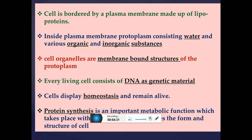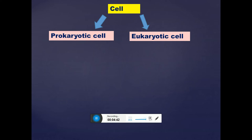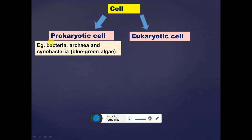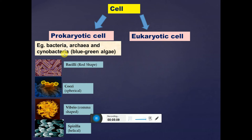Cells are categorized into two large categories: prokaryotic cells and eukaryotic cells. In today's lecture we are concentrating on the prokaryotic cell. Examples of prokaryotic cells include bacteria, archaea, and cyanobacteria (blue-green algae). According to shape, there are four types of bacteria: rod-shaped bacteria called bacilli; round or spherical bacteria called cocci; comma-shaped bacteria called vibrio; and helical bacteria called spirula.